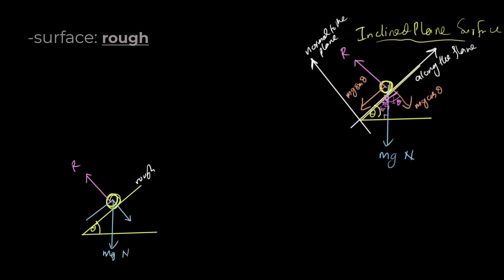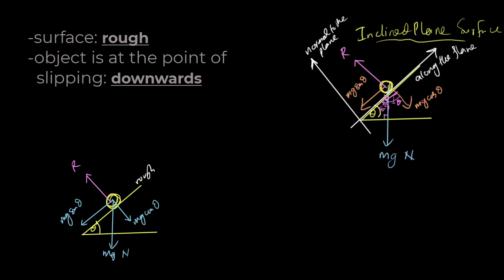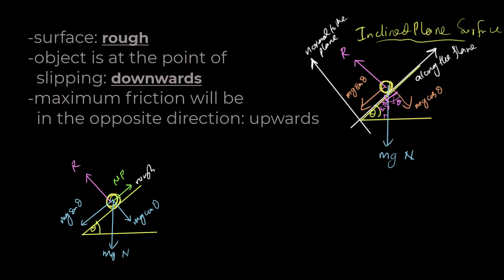...this is mg sine theta and this is mg cos theta. Now since this is in limiting equilibrium, the friction is going to work on that, and that friction is going to be maximum friction, mu R. So this is going to be the situation.